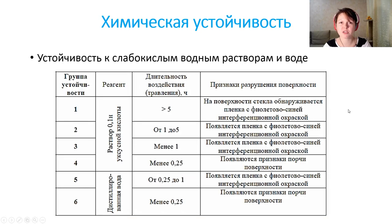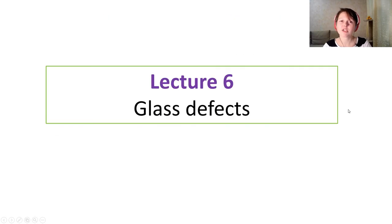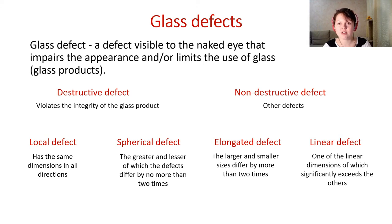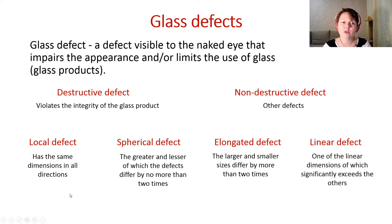Let's talk about glass defects. A glass defect is a defect visible to the naked eye that impairs the appearance or limits the use of glass. We have destructive and non-destructive defects by their effect on usage, and we classify defects by shape into local, spherical, elongated, and linear defects.